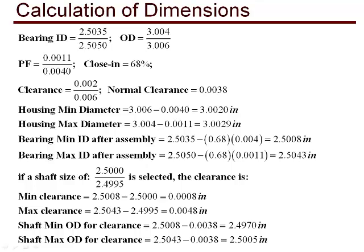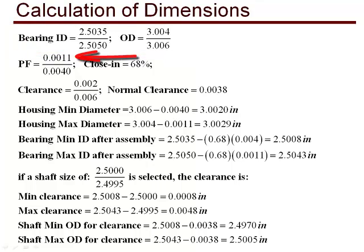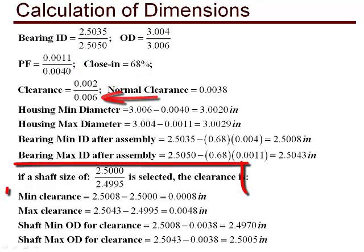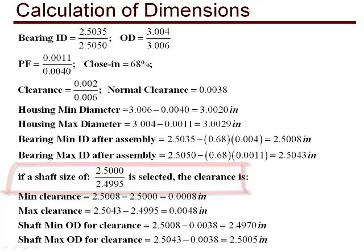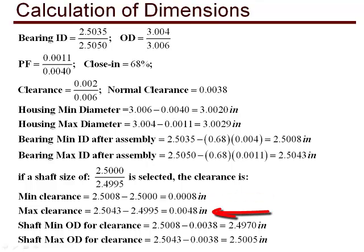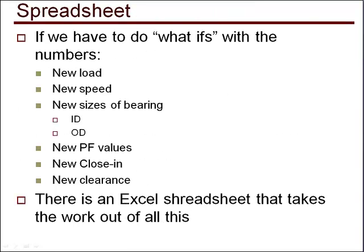Now for calculating the dimensions for the housing, bearing, and journal. Using a bearing with the limits shown, along with press fit minimum and maximum, clearance minimum and maximum, and a size range for the shaft of 2.4995 to 2.5, the clearance range will be a minimum of 0.8 thousandths to a maximum of 4.8 thousandths. Notice this is too tight for the minimum clearance but is in the range for the maximum. If we want to change any of the values and recompute, we have all the hand calculations to repeat. The good news is there is a spreadsheet that takes the tedium out of this process.